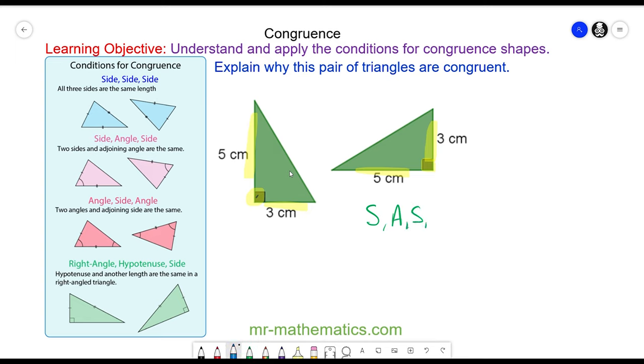You could also say because of Pythagoras' theorem that the hypotenuse would be the same on both because the two shorter sides are the same. So you could also prove right angle, hypotenuse, side.